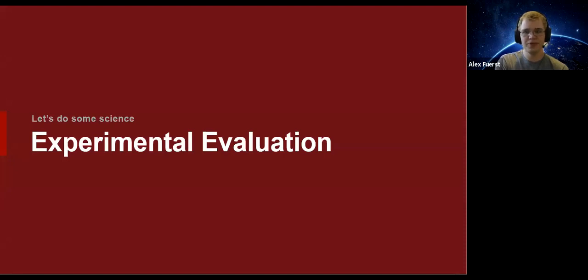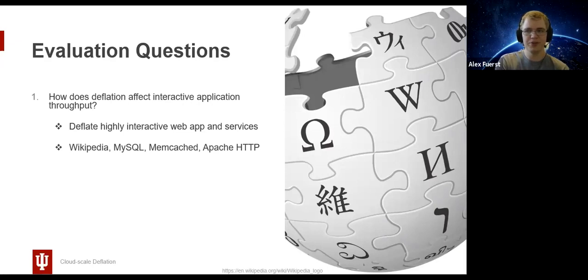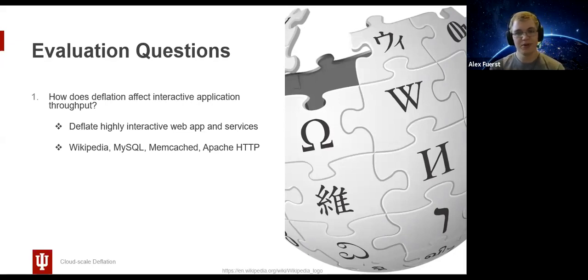We conducted several testbed experiments and simulations to show the efficacy of deflation in cloud environments. Our experiments seek to answer two important questions. First, how does deflation impact the throughput of interactive applications? We test this by locally running Wikipedia, a highly interactive web application, along with its dependent services. Its tech stack includes a MediaWiki front end, a MySQL database, Memcached for in-memory cache storage, and an Apache HTTP server. These were all run in KVM, and load is applied by loading the largest web pages as we deflate each VM.